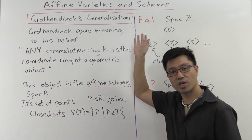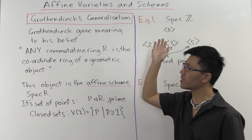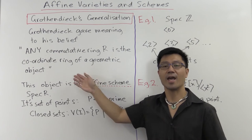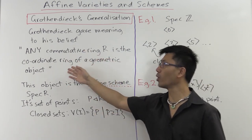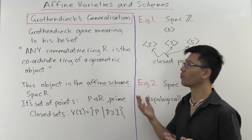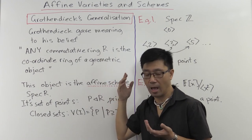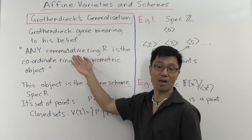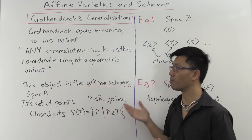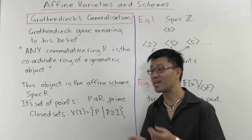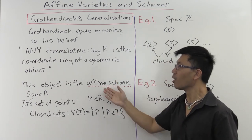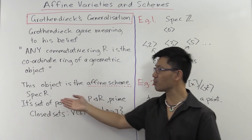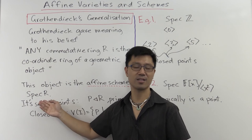Grothendieck wanted to generalise this setup. His generalisation was based on the belief — which he gave precise mathematical meaning to — that any commutative ring is actually the coordinate ring of some sort of geometric object. If the commutative ring happens to be an affine f-algebra, you get an affine variety. But he believed that any other commutative ring still corresponds to something geometric. He did this essentially by fiat: an affine scheme is just the data of a commutative ring, but when we think of it geometrically, we call it Spec R — the spectrum of R.